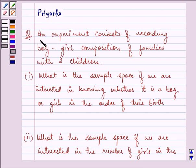Here in this question it says an experiment consists of recording boy-girl composition of families with two children.